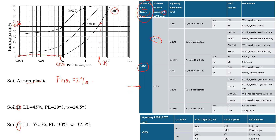We can also calculate how much gravel we have. Out of 100% total soil fractions, we subtract 66% passing through, which gives us 34% gravel. For sand: we have 66% passing the gravel-sand boundary and 2% fines, so that gives us 64% sand.